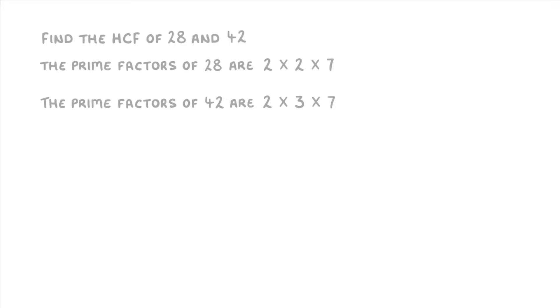and pick out the numbers that are common to both. So, these 2's, which they both have, and these 7's, which they both have. Then all we do is multiply these two numbers together. So, 2 times 7, which is 14. And that's our highest common factor.